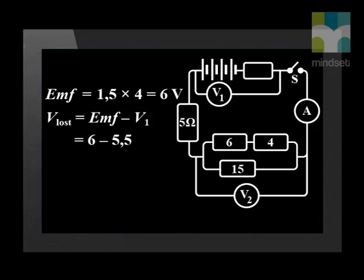Next, we see that voltmeter 1 reads 5.5 volt instead of 6. This means 0.5 volts are lost due to internal resistance.